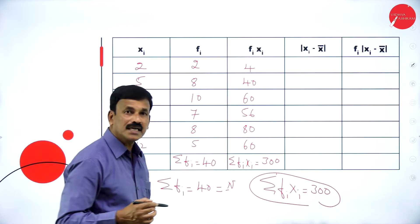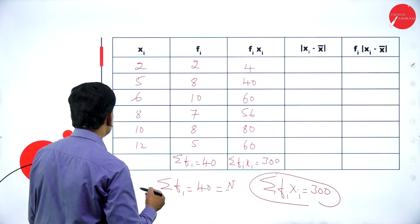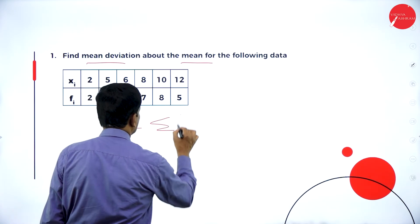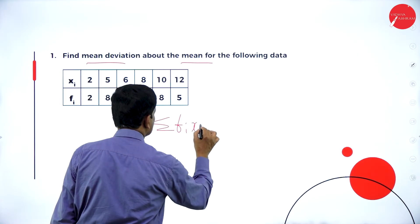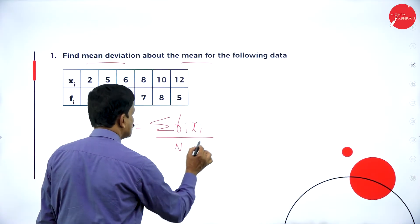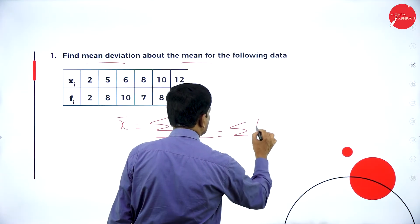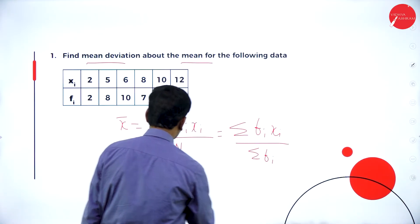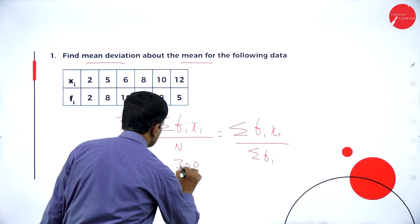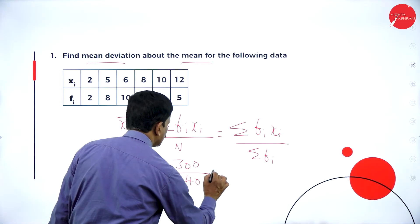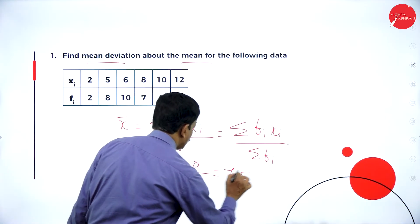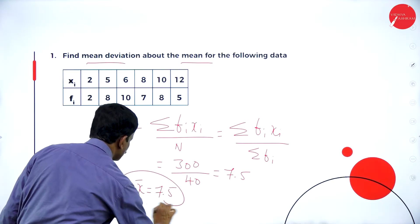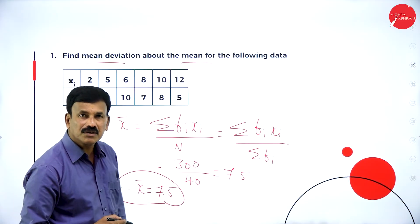Now find x-bar. x-bar equals sigma fi*xi divided by n, which is 300 divided by 40. That equals 7.5. Therefore, x-bar is equal to 7.5.